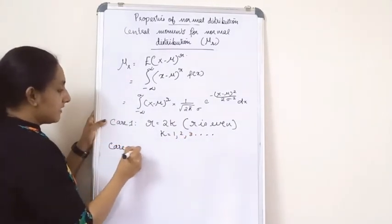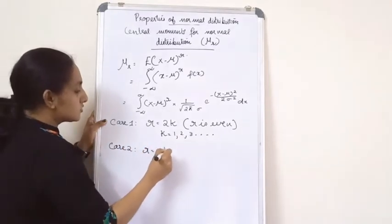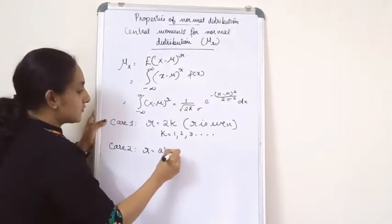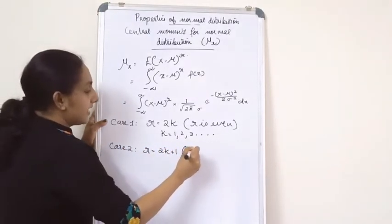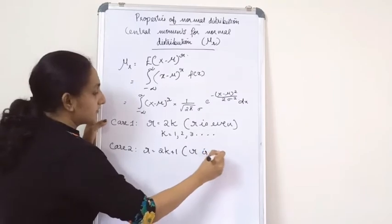In case 2, r is equal to 2k plus 1, where r is odd, and k can again take the values 1, 2, 3, etc.